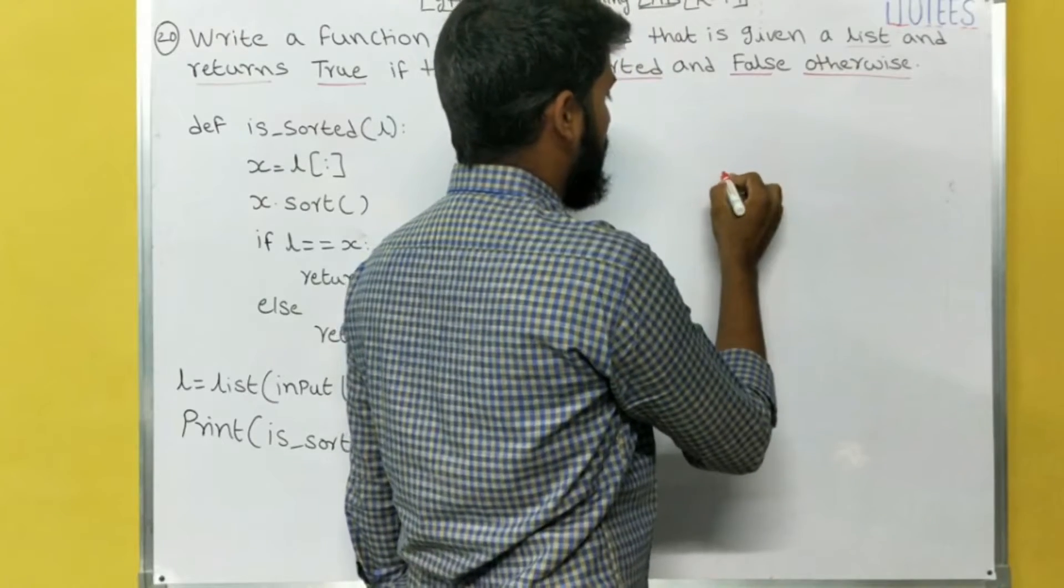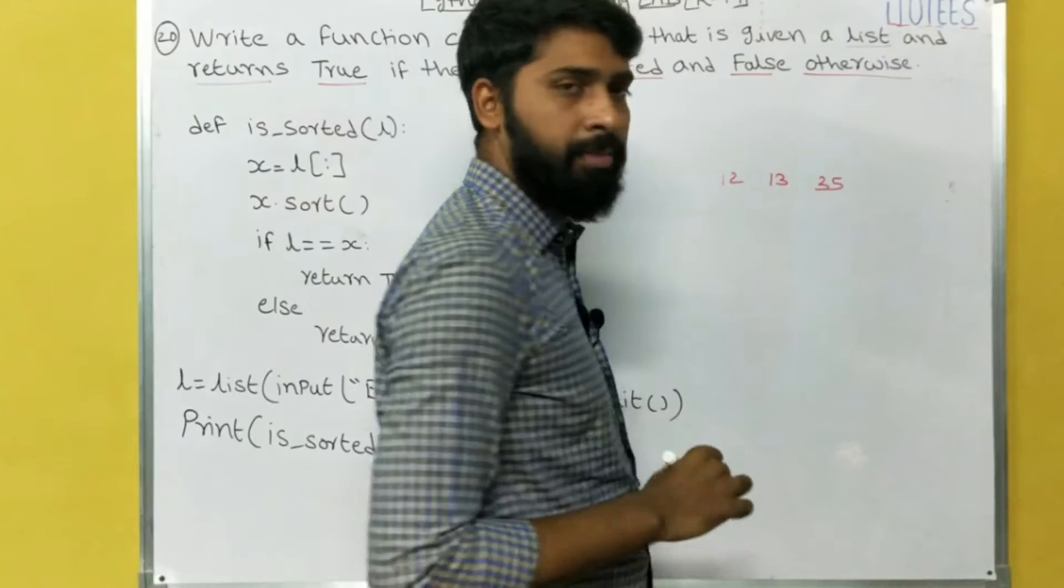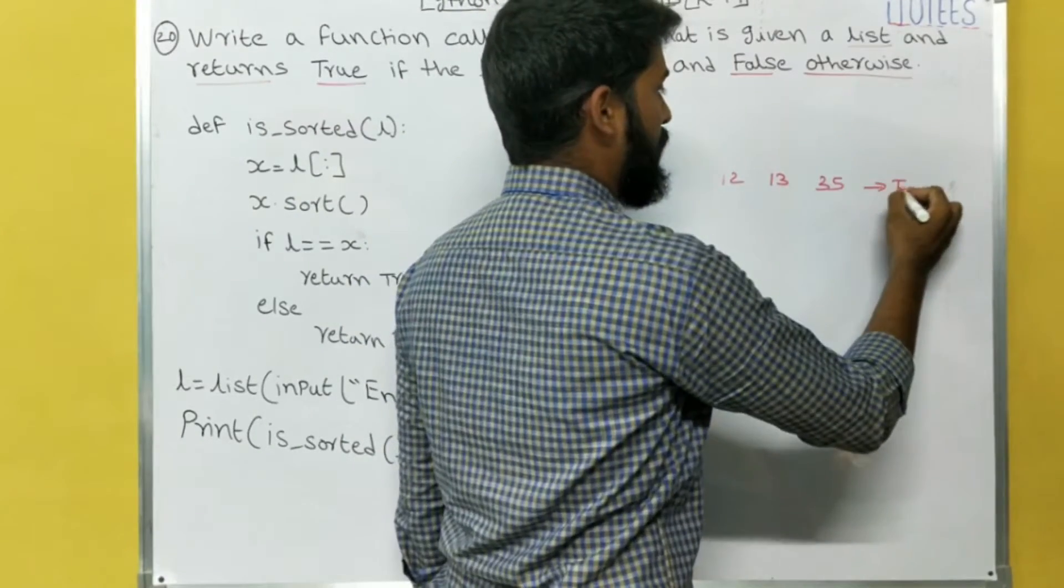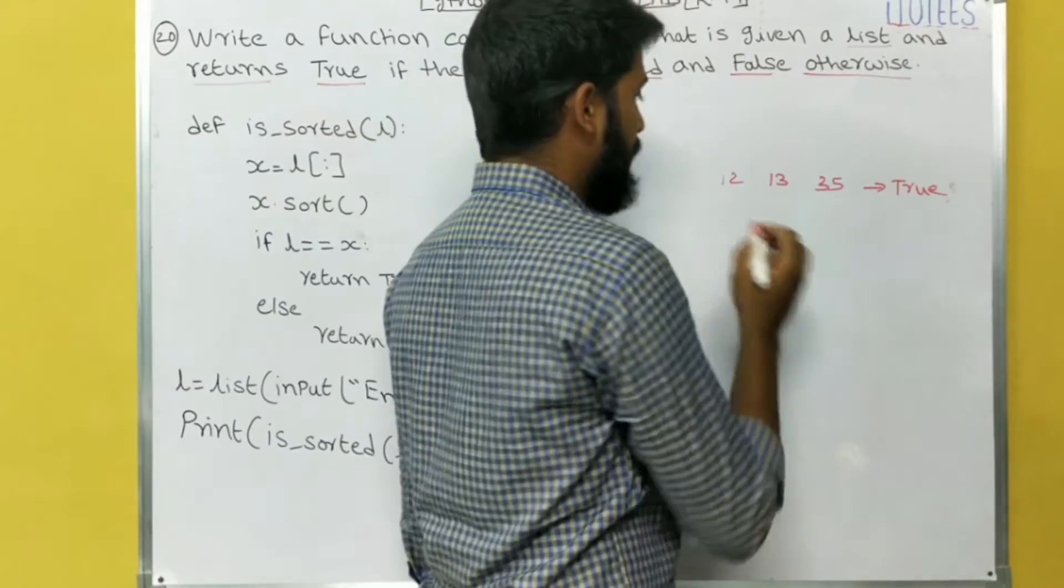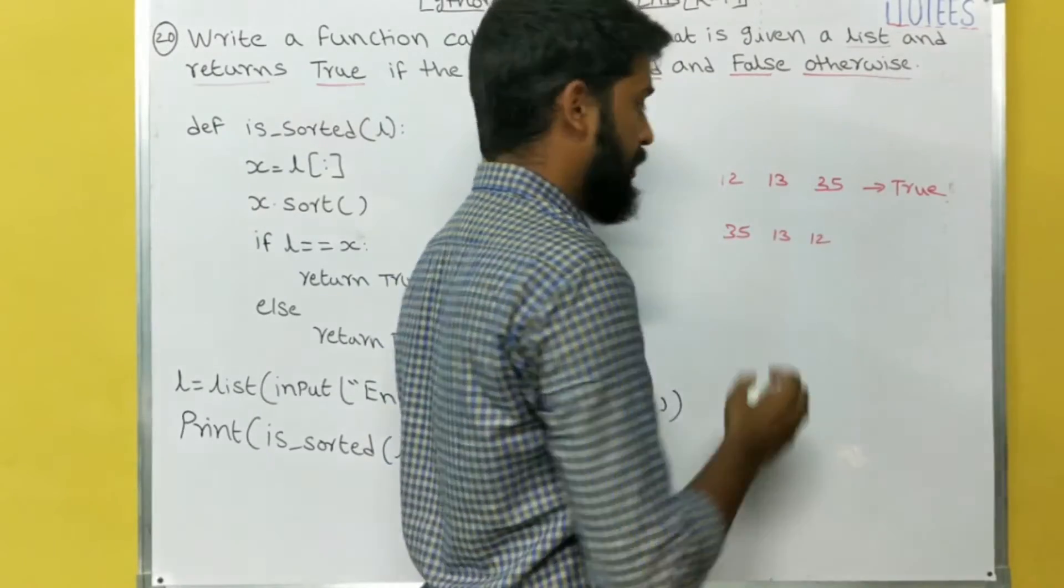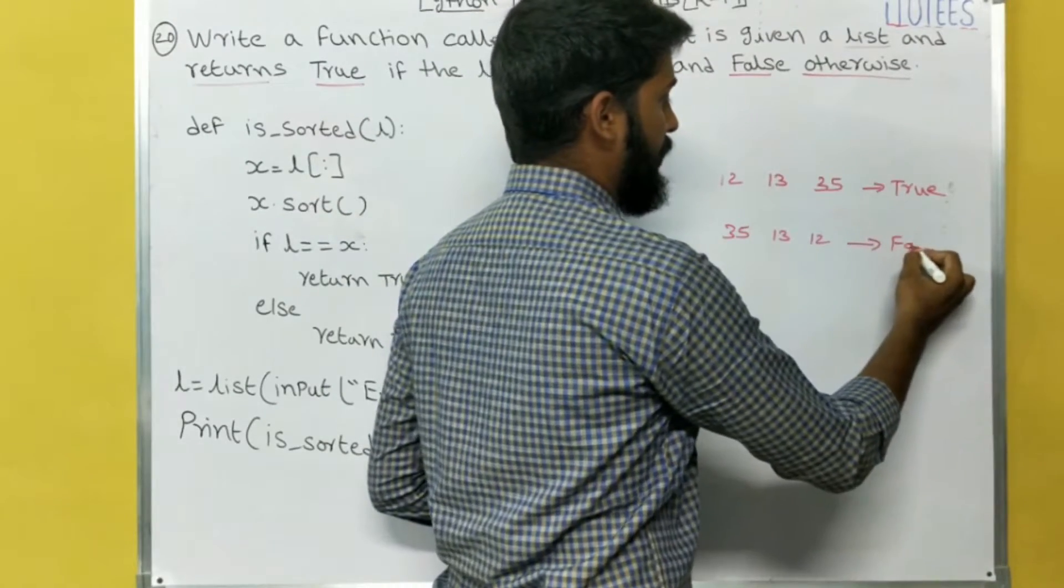Now we can see the example. For example, I entered a list 12, 13, 35. Now this is in the sorted order, so it returns True. If I enter 35, 13, 12, it is not sorted, so it returns False.